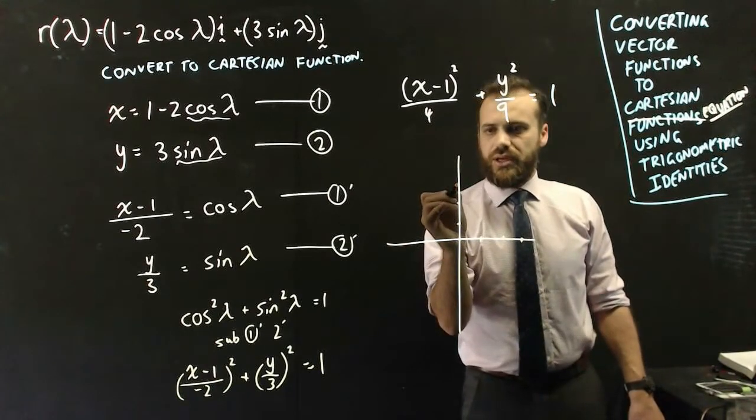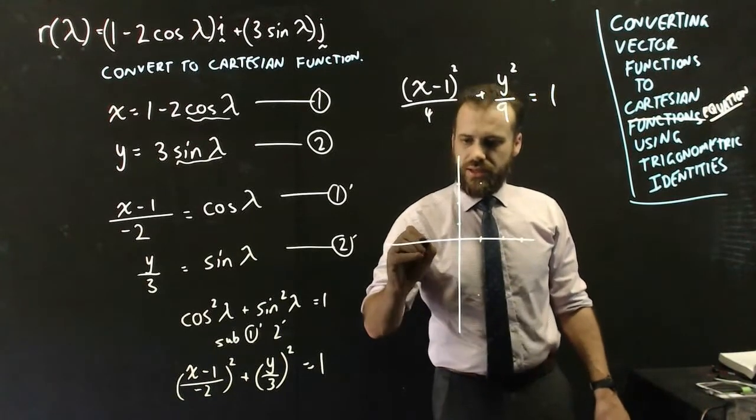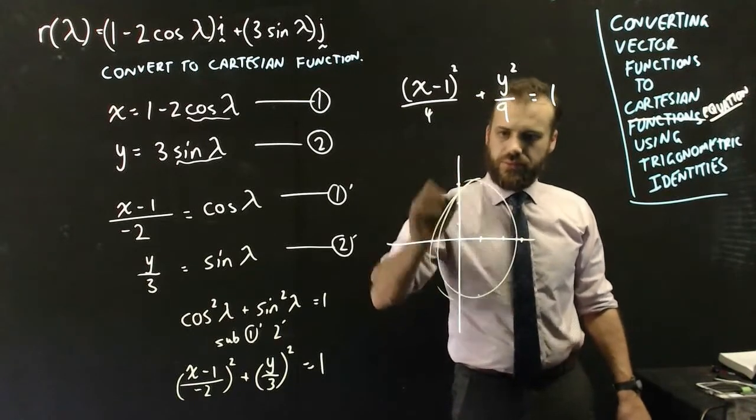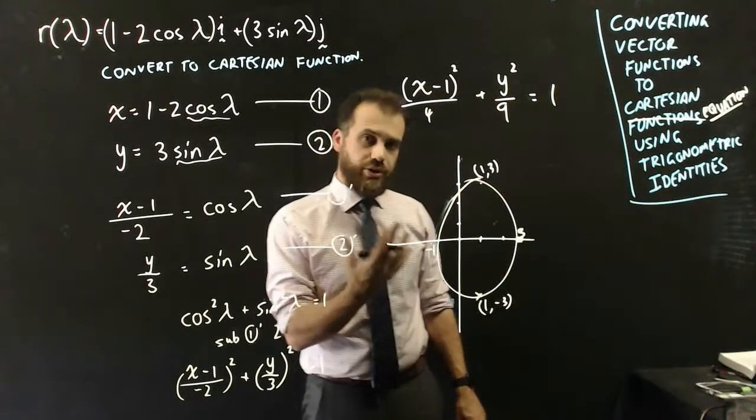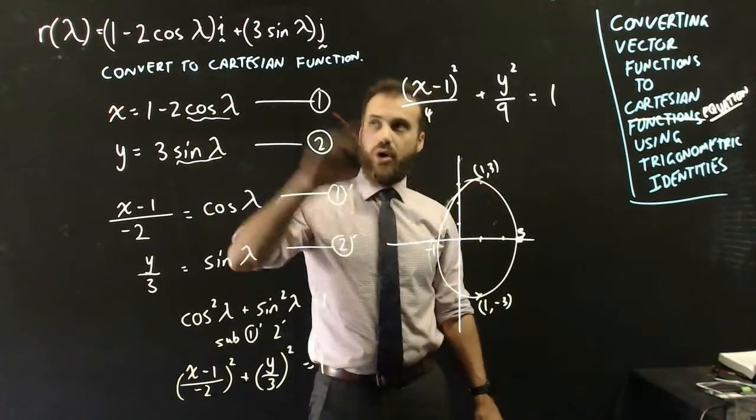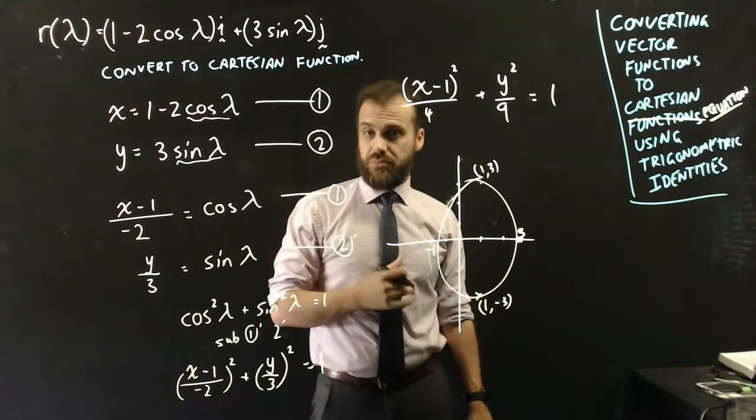2, and 3. That means that there's going to be points here, here, down here, and here, and we get a nice little ellipse. And so that's pretty cool. So as lambda changes, this object is moving around this ellipse. Pretty cool.